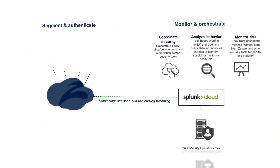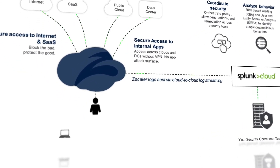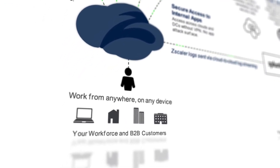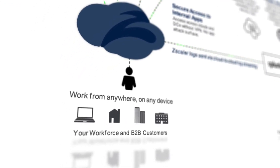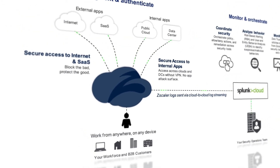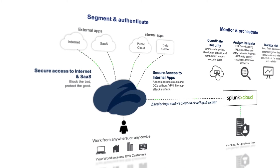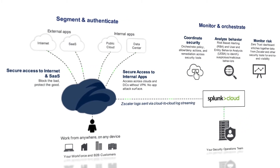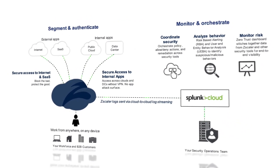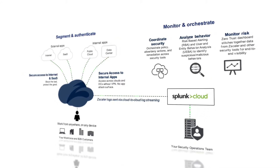Zscaler has visibility into your internet, private, and SaaS application traffic for your entire enterprise. Whether your employees are in the office, branch, or on the beach, Zscaler protects your entire workforce with no traffic hairpins, backhauls, or VPNs. With Zscaler, your users are protected as they go directly to the cloud resources they need. With Zscaler and Splunk, you get protection and visibility across your enterprise.